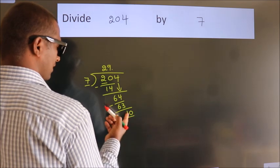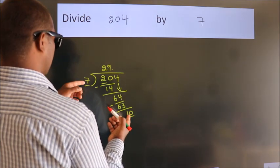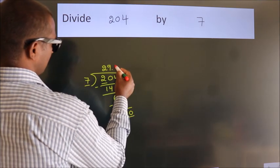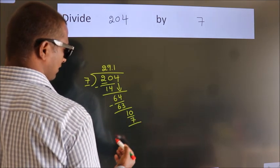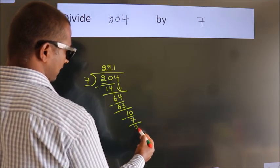So 10. A number close to 10 in the 7 table is 7 ones, 7. Now we subtract. We get 3.